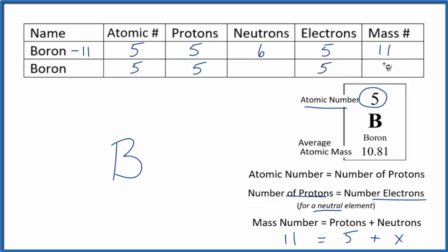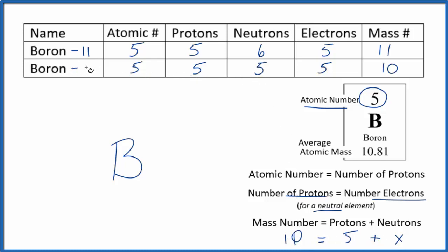The other 20% of boron atoms are boron-10, with a mass number of 10. For boron-10: 10 = 5 + neutrons, so there are 5 neutrons. When we calculate the weighted average of these two isotopes based on their abundance, we get 10.81 — which is the average atomic mass shown on the periodic table.